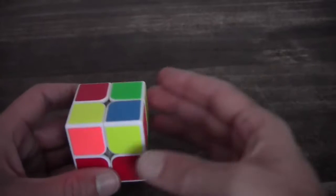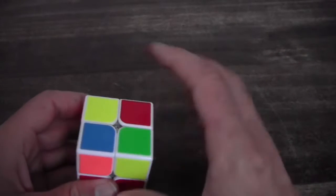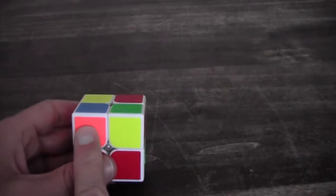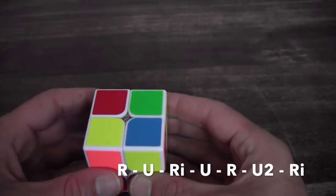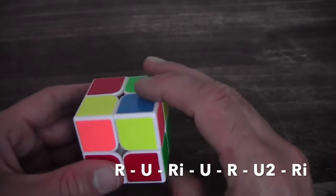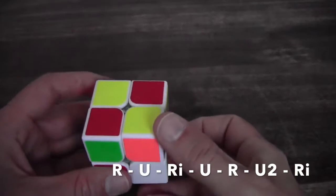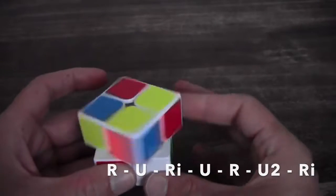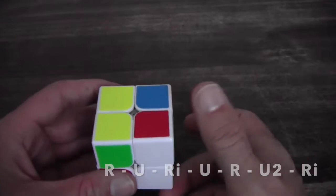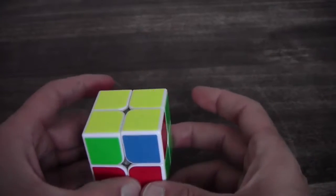This is the case I'm going to show you. And otherwise when you put them on the left top there should be one yellow here. So this is the first case. And in this case you can perform the following algorithm: R U R inverse U R U2 and R inverse.